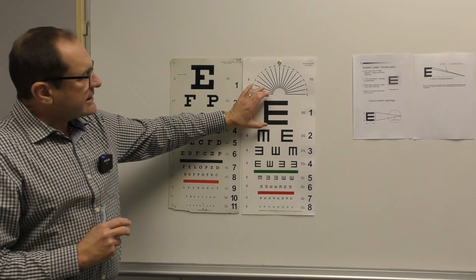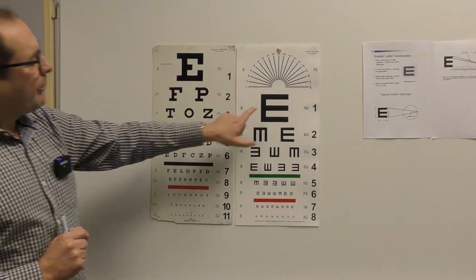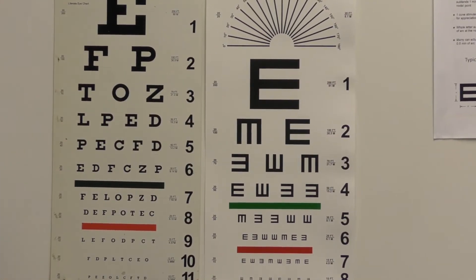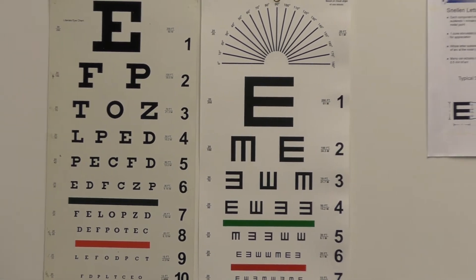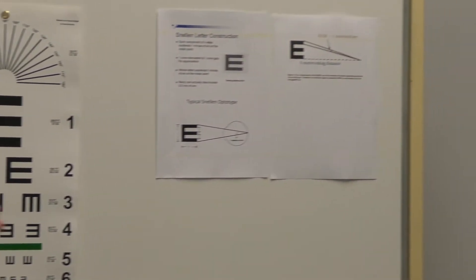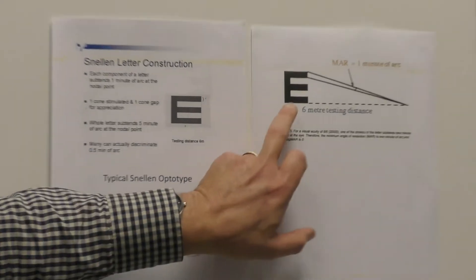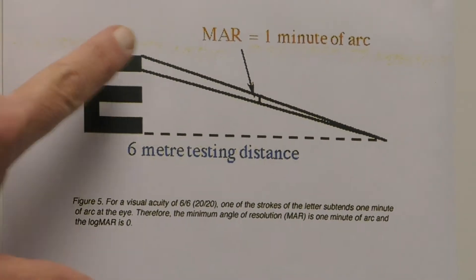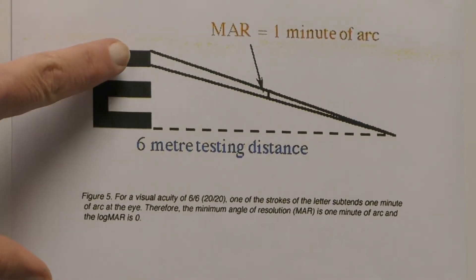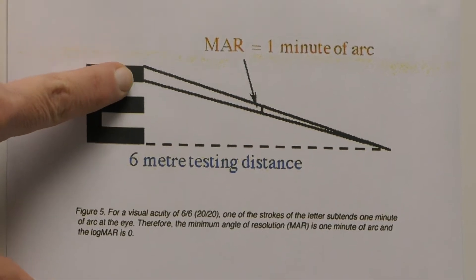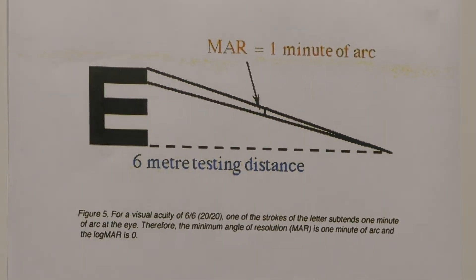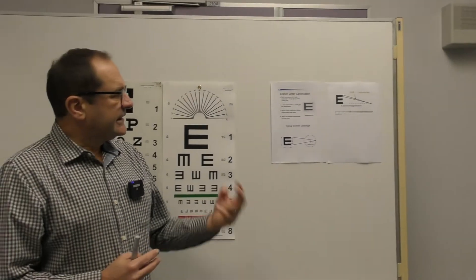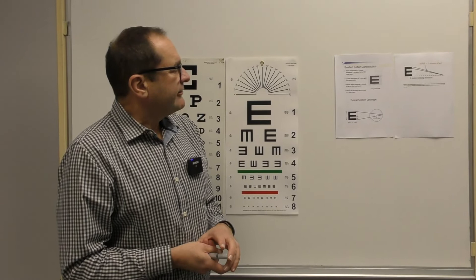Each component of a letter is one minute of arc. One minute of arc refers to the distance — in this case, the patient should stand 6 meters from the chart. The minimum angle of resolution is the distance between two adjacent cones being able to distinguish the difference in resolution.